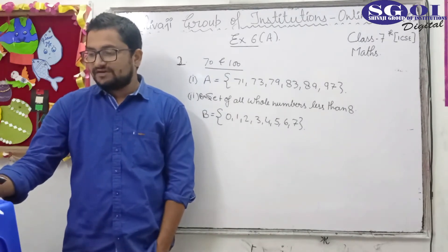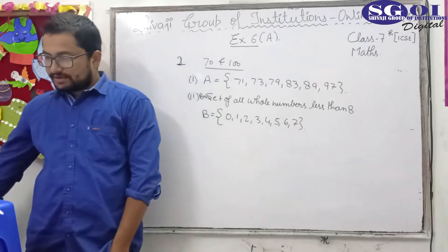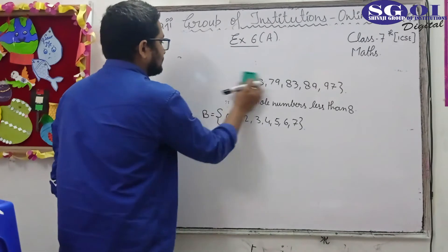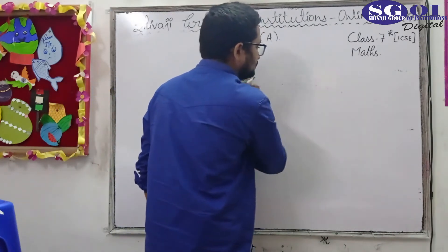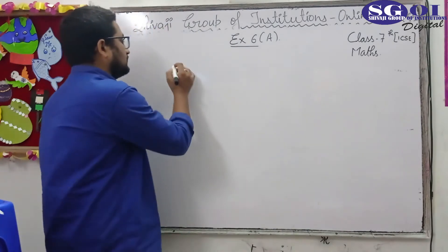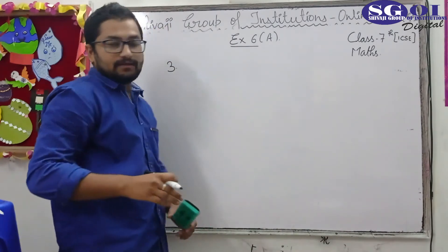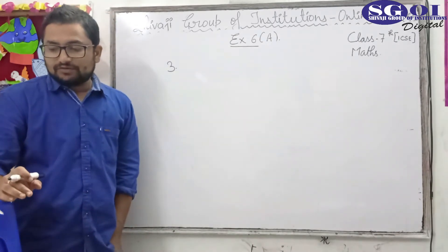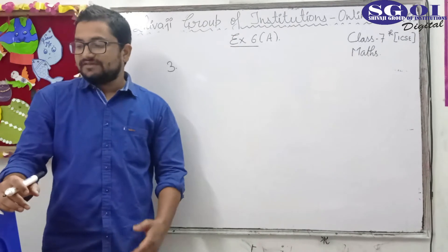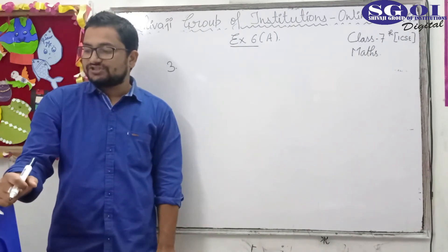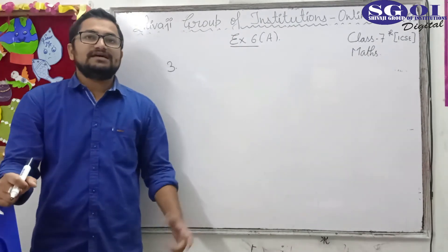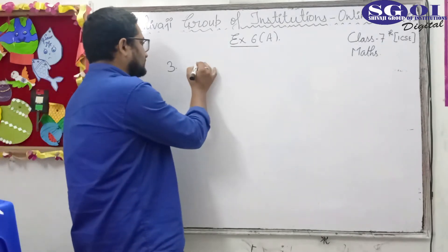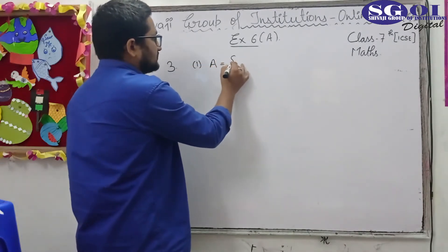Similarly you can write all the other parts into roster form by yourself because I don't think these questions are of that much difficulty the way problem looking so let's move to next question that is question number 3. In question number 3 there are 9 parts here are set builder form and you have sets and you can write a roster form.